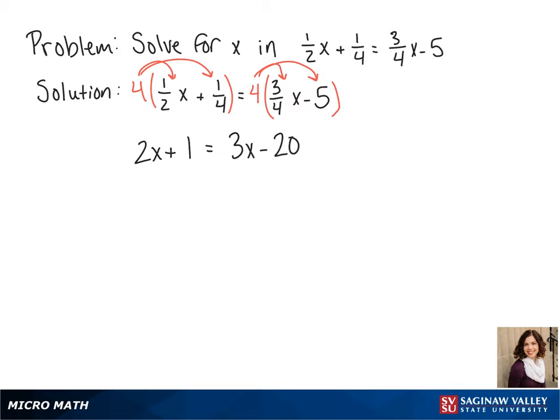Now we pick a variable to move to the other side, and I choose 2x. So I subtract 2x from each side and I get 1 equals x minus 20.